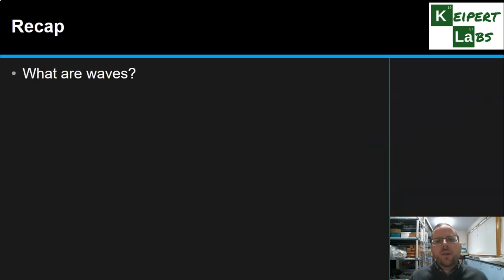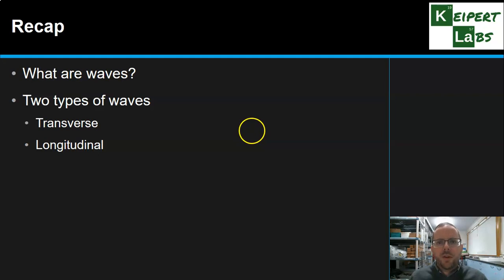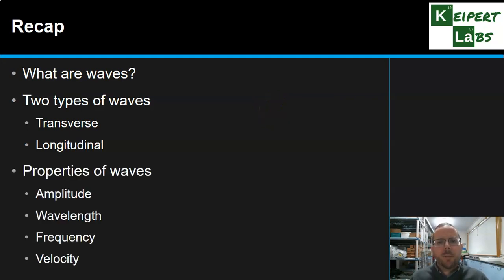So we looked at what are waves, a form of energy transfer based on oscillating particles. We looked at the idea that depending on what those oscillations are doing, that we get two types of waves, transverse waves and longitudinal waves. Are the oscillations perpendicular or parallel to the way, the direction the wave is travelling in? And we looked at the four key properties, amplitude, wavelength, frequency, and velocity, that help us to describe and define what is happening to waves.